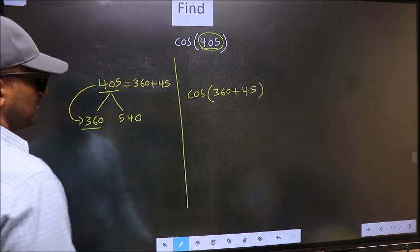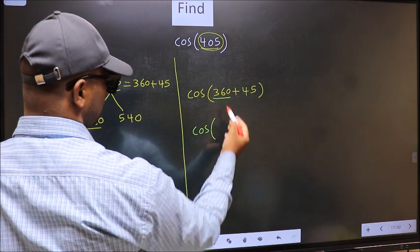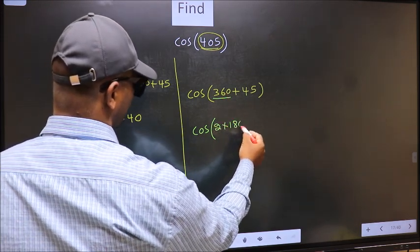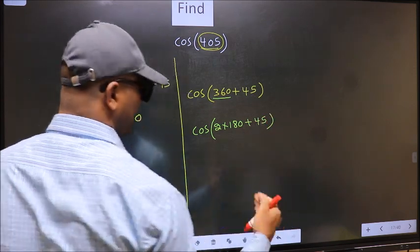Next, cos. In place of 360, now we should write 2 times 180 plus 45.